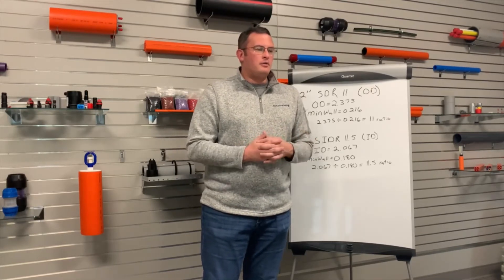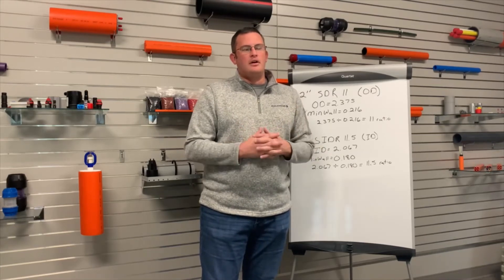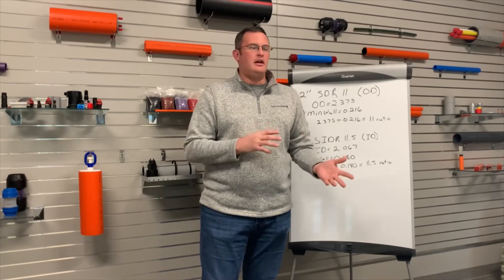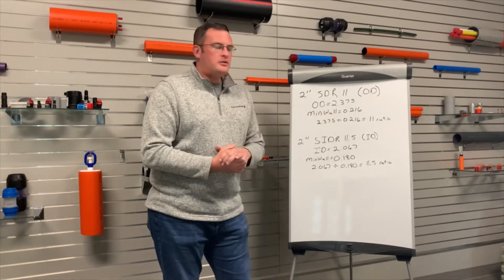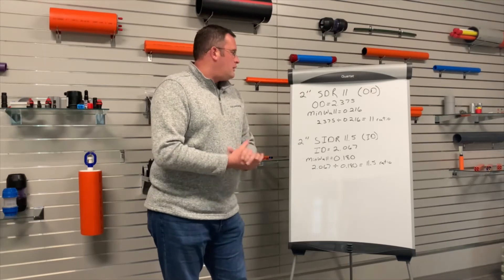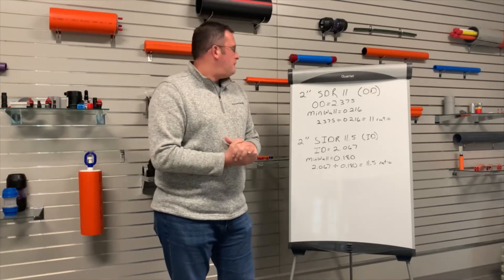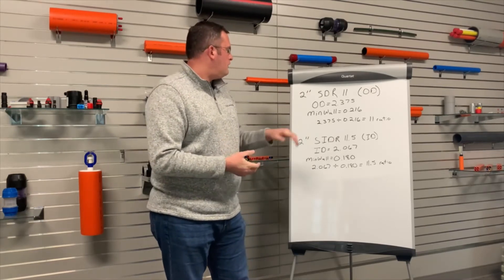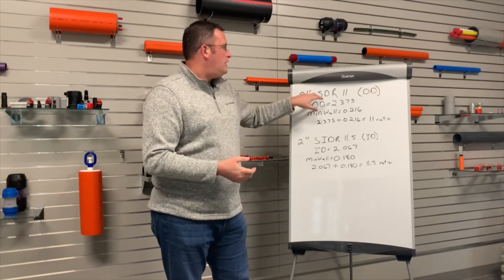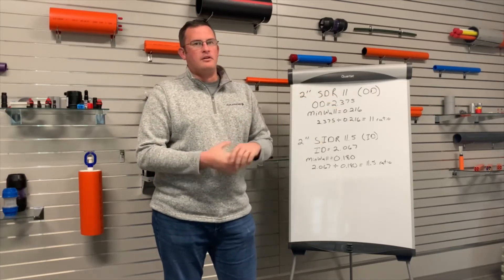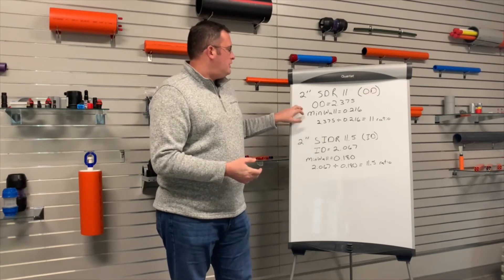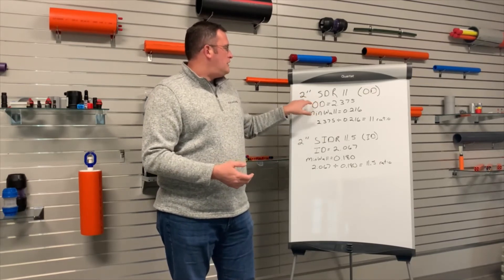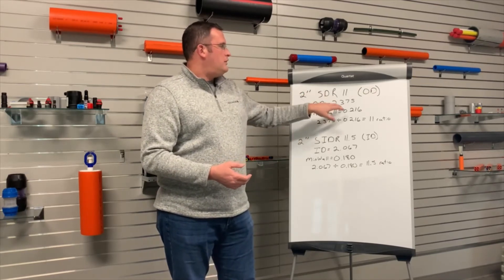The calculations and formulas for understanding the wall thicknesses and how they vary and work in relation to the ID and OD are very simple. Just for explanation purposes, I've made a couple quick calculations here to share with you guys. First is our 2-inch SDR 11. SDR is the OD-controlled wall thickness ratio. You can see that the OD of 2-inch SDR 11 is 2.35.